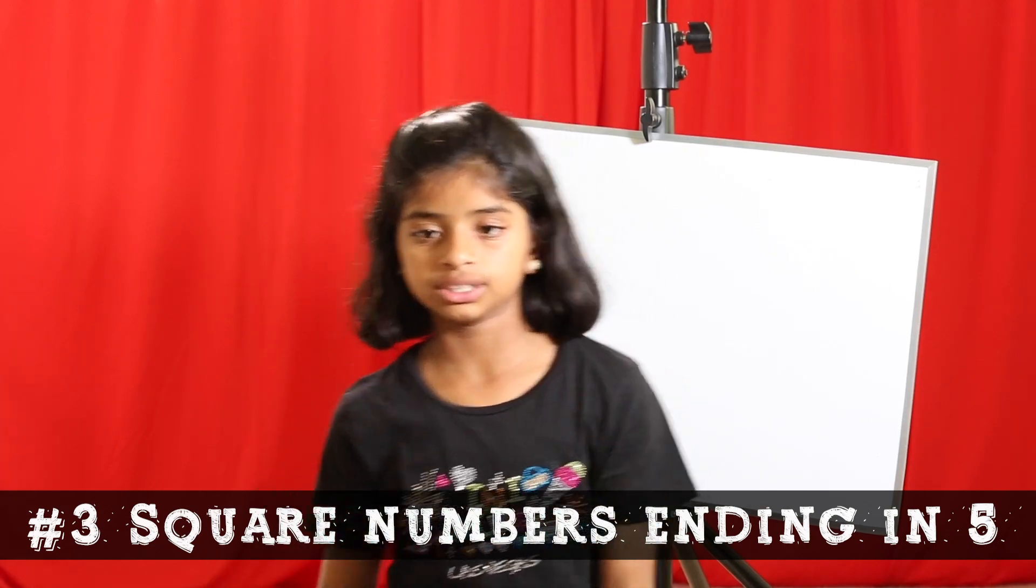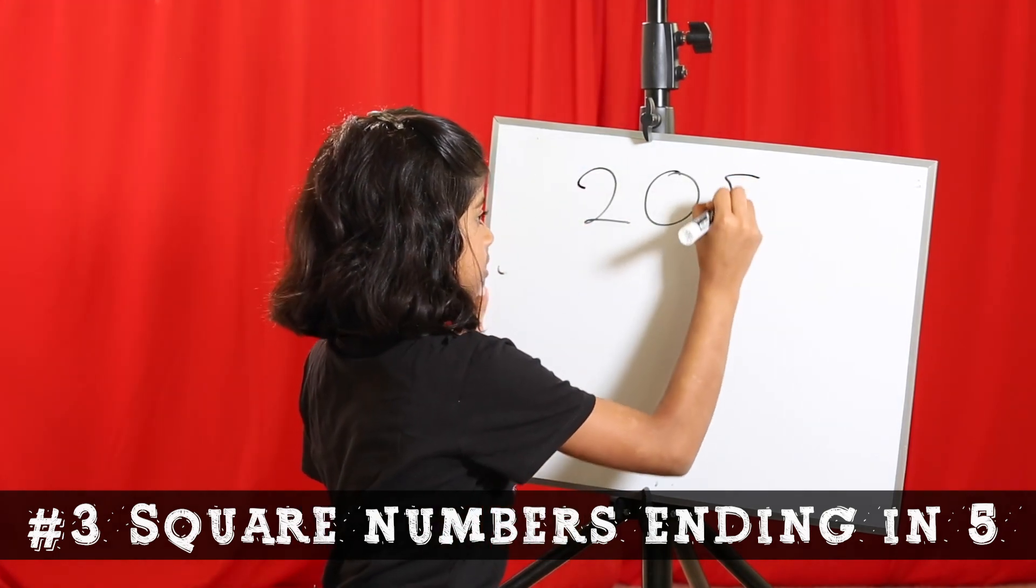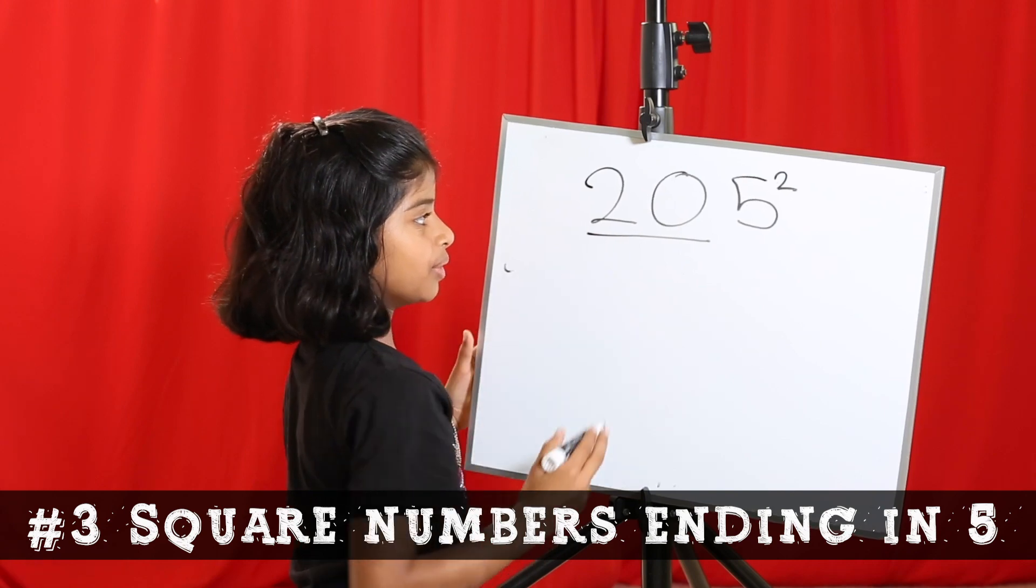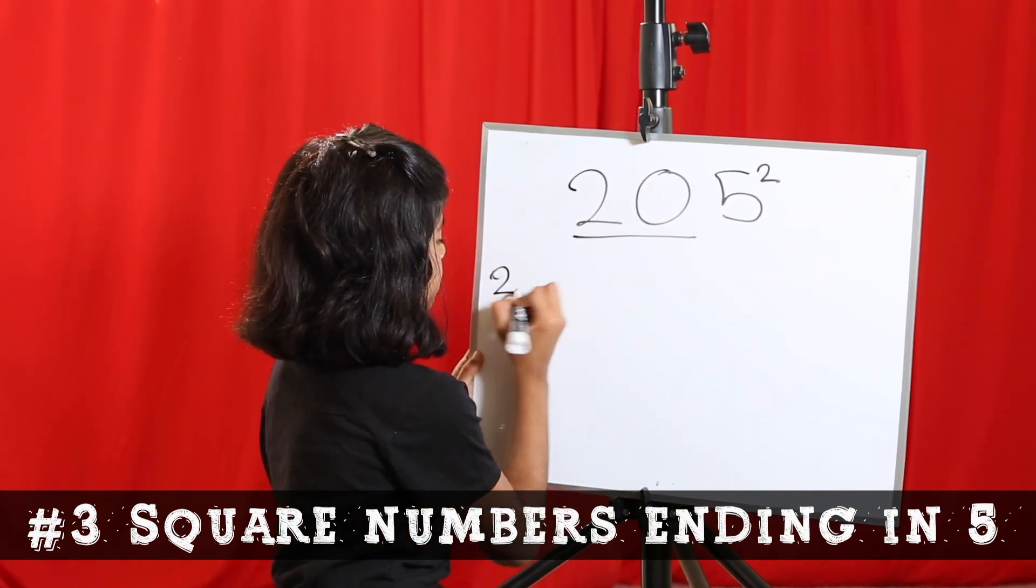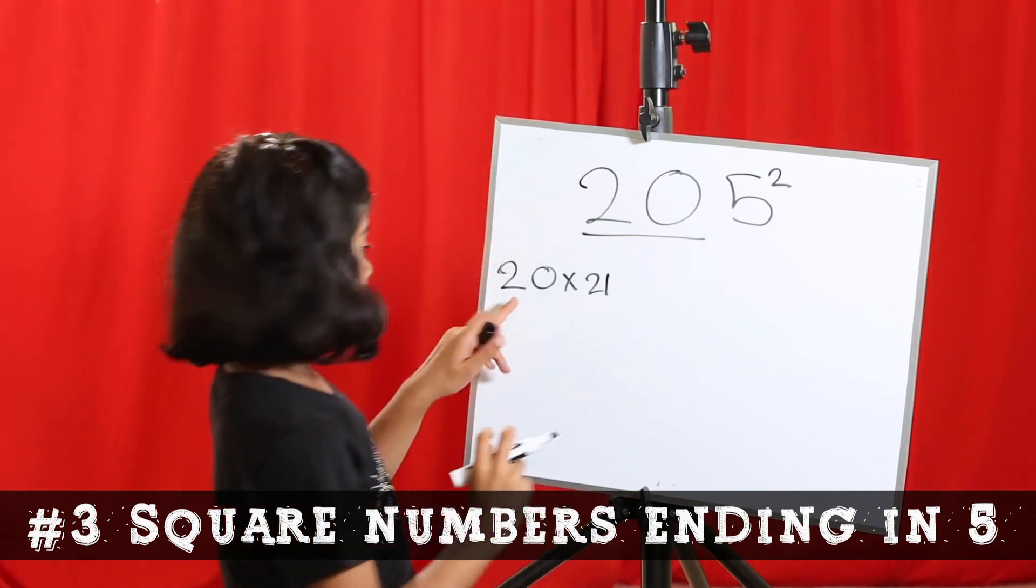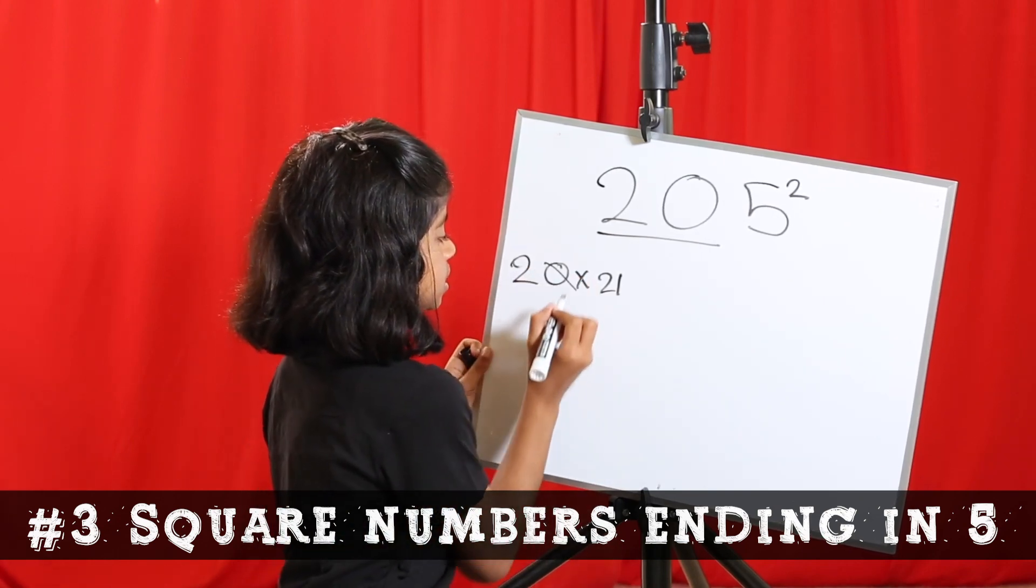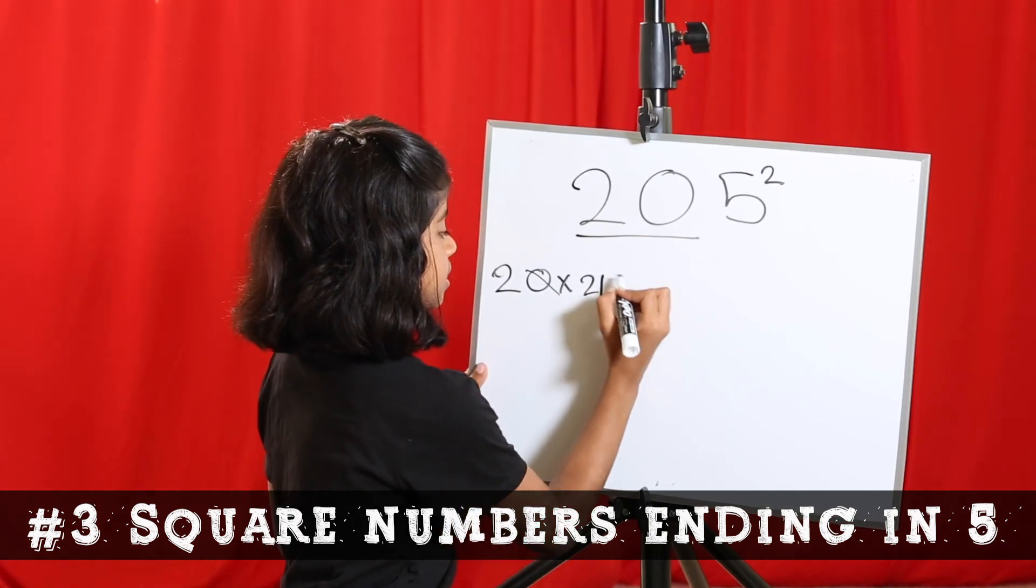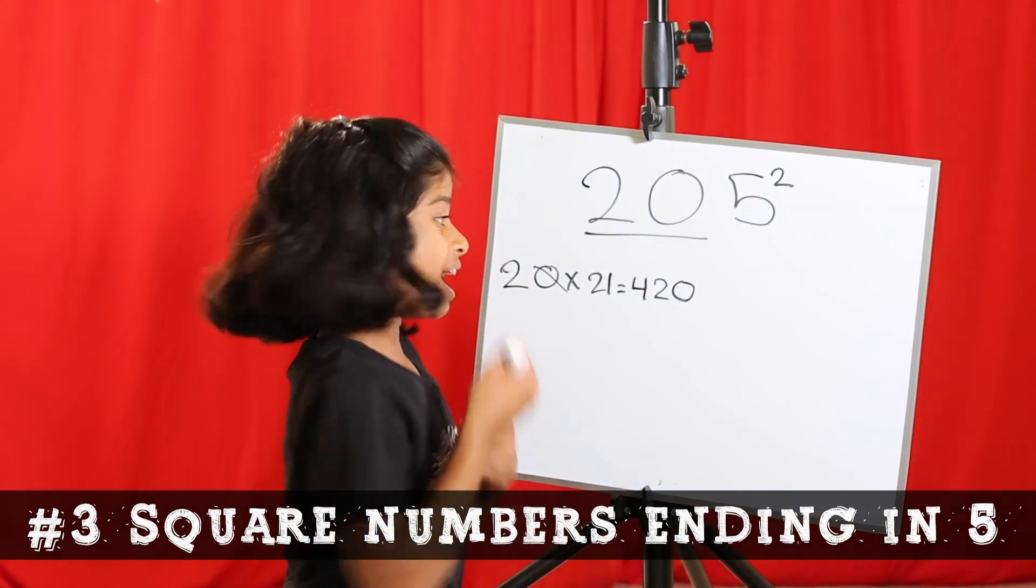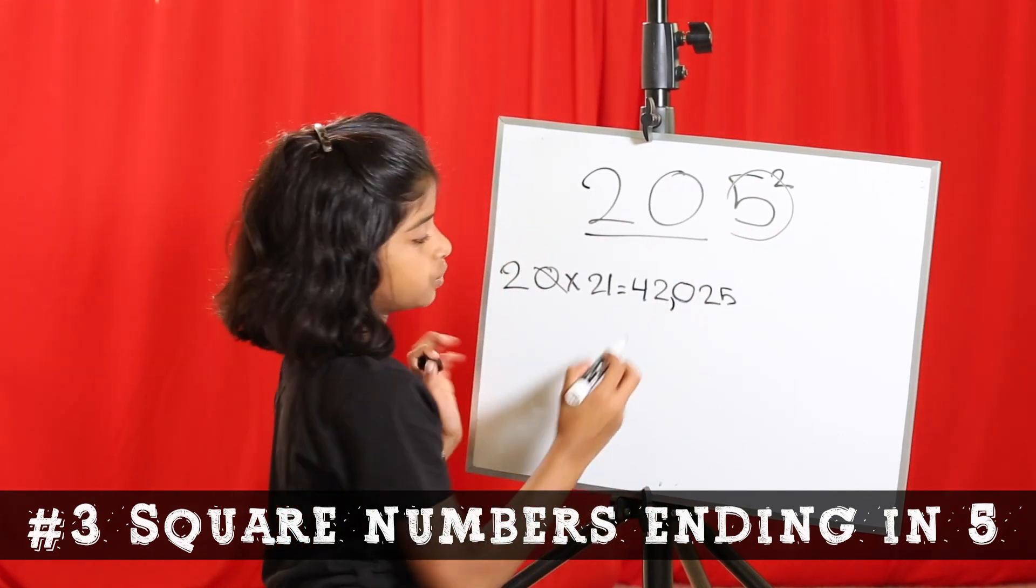The same trick can be used in larger numbers, like a 3-digit number. I'm going to use 205. So the first number is 20. So we're going to write the next number is 21. So 20 into 21. Now, let's use the trick I showed you in the beginning, how to multiply numbers with 0 in the end. We're going to cross off the 0. Then 21 into 2 is 42. Then add the 0 equals 420. And the last digit is 5, so we always write 25 in the end. So our answer is 42025.